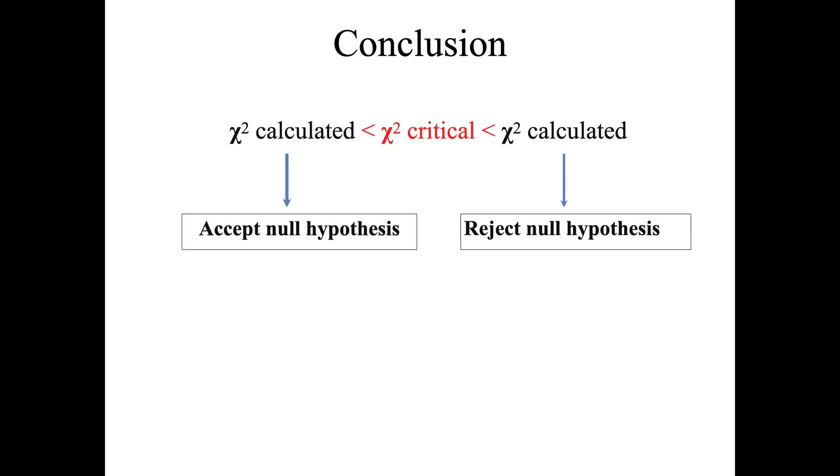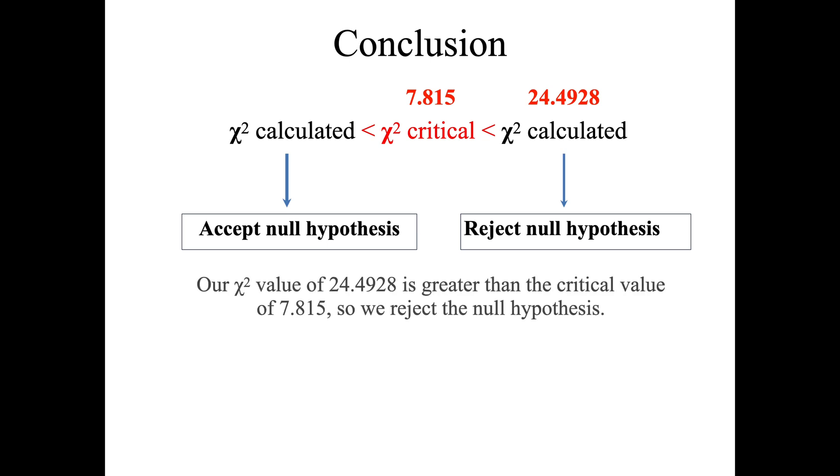If we're going to conclude using this, we have 7.815 as our critical value but 24.4928 is our calculated value. Since our calculated value is greater than the critical value, we would reject the null hypothesis this time.